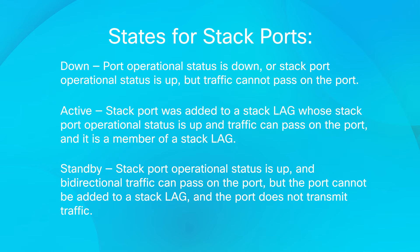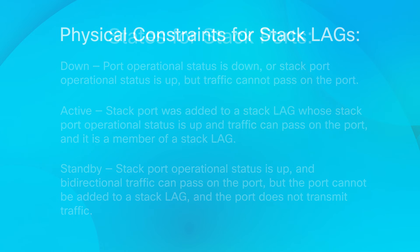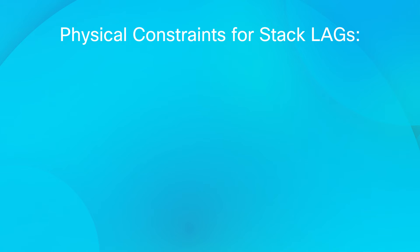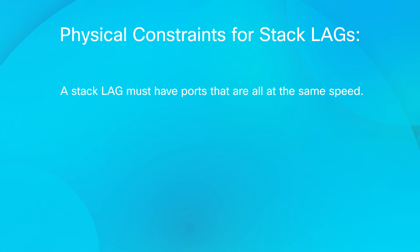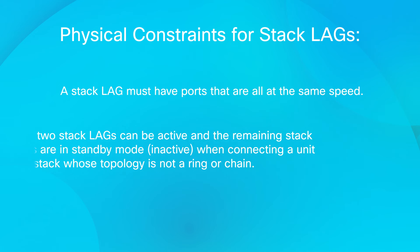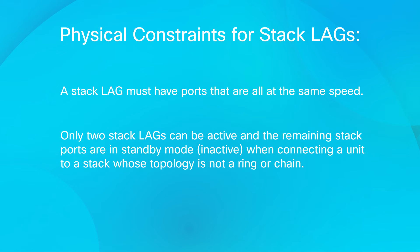A possible reason for a port being on standby is if stack ports with different speeds are used to connect a single neighbor. This brings me to some physical constraints for stack LAGs that you should keep in mind: a stack LAG must have ports that are all the same speed; only two stack LAGs can be active; the remaining stack ports are in standby mode when connecting a unit to a stack whose topology is not a ring or chain — for example, when connecting a unit to more than two neighboring units in a star topology.